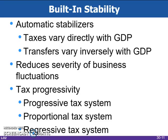Transfer payments like unemployment compensation and welfare payments vary indirectly with economic business cycles. Unemployment compensation and welfare payments decrease during economic expansion, and they increase during economic contractions.